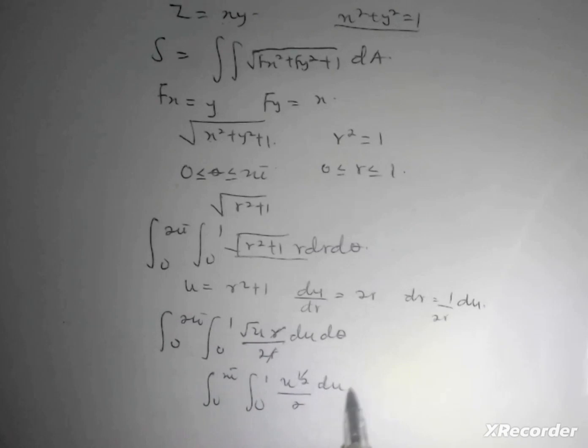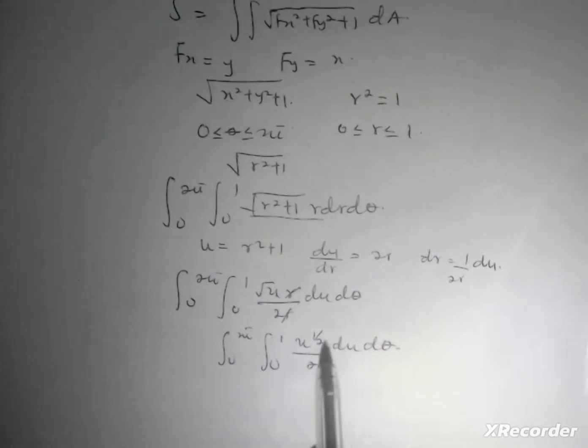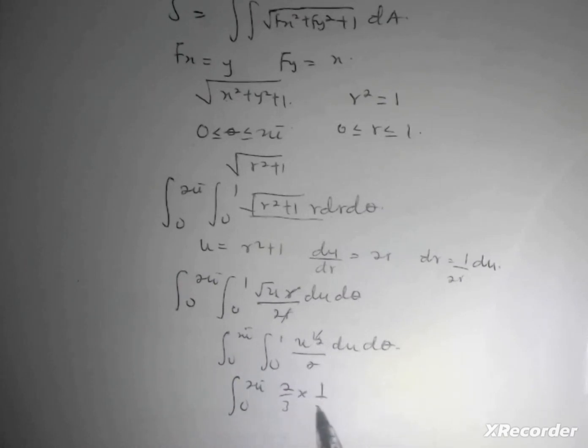Computing this further, I'll add 1 to the exponent, so I have the integral from 0 to 2π of (2/3) × (1/2) × u^(3/2) evaluated from 0 to 1, dθ. These will cancel, so I get 1/3.